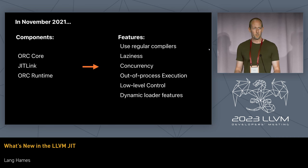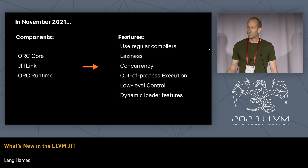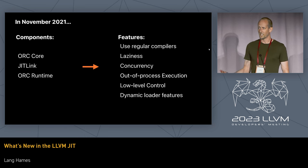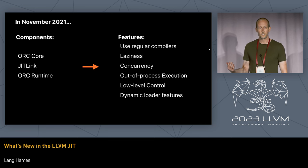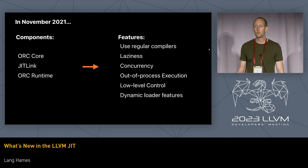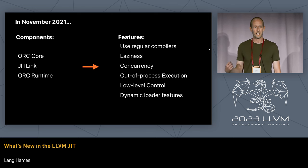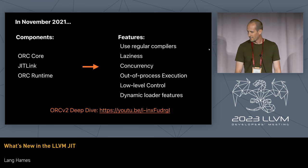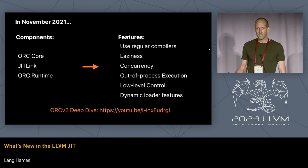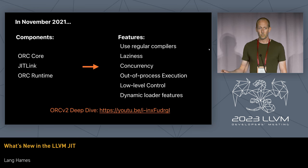If you put those three components together, you get a bunch of features. We can use regular static compilers like LLVM in a JIT context. We can compile lazily and concurrently, execute JITted code in a separate process, have low-level control over JITted machine code through the JIT Linker APIs, and use dynamic loader features like static initializers, de-initializers, and thread local storage. You can check out that talk from 2021 at the link below.